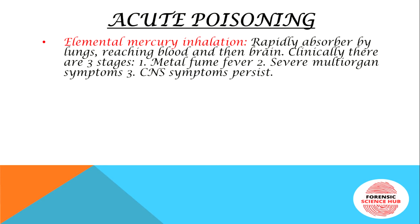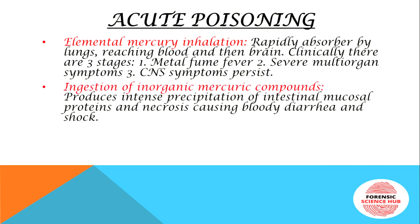In acute poisoning — elemental mercury inhalation: when mercury vapors are inhaled, they are rapidly absorbed by the lungs, then from there they reach the blood and the brain. Clinically, there are three stages: initially metal fume fever is seen, then severe multi-organ symptoms occur, and in the last phase CNS symptoms persist.